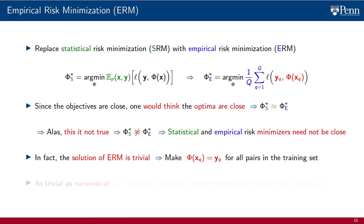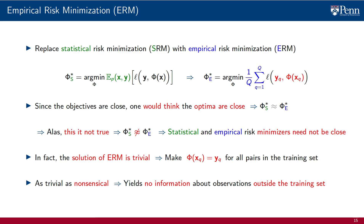But this is just as trivial as it is nonsensical, because it yields no information whatsoever about observations that are outside the training set. Any function in which phi of x_q copies the corresponding output value y_q is optimal in the empirical risk. The outputs phi of x for inputs not part of the training set can be arbitrary — they do not appear in the cost. We have learned nothing about what goes on outside of the training set.